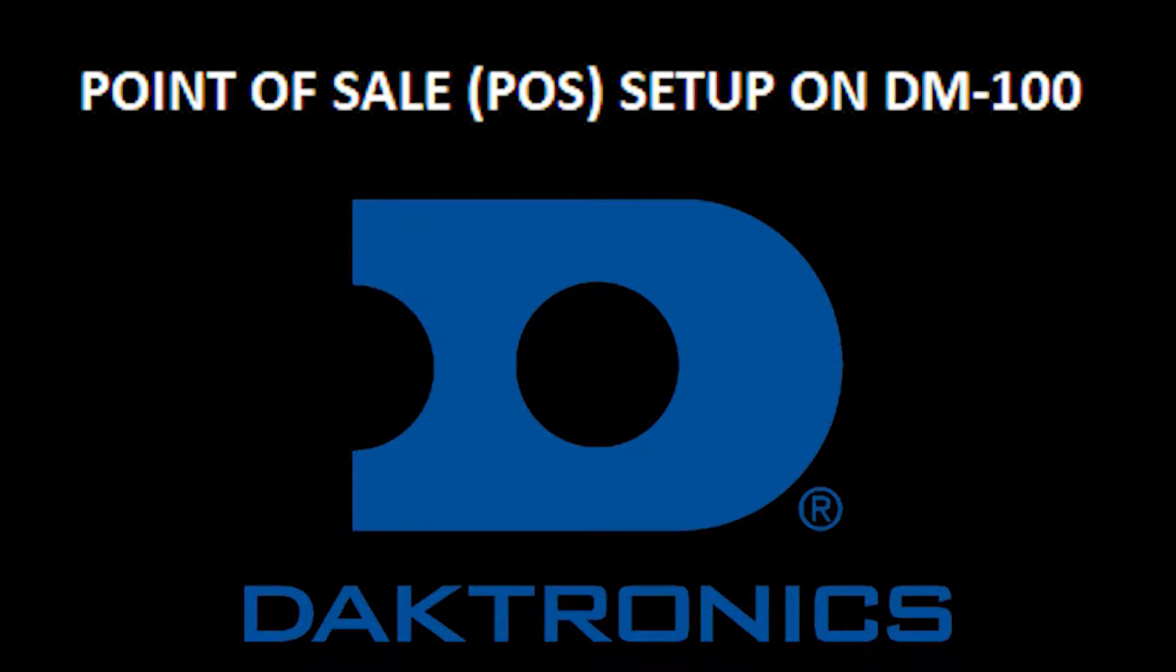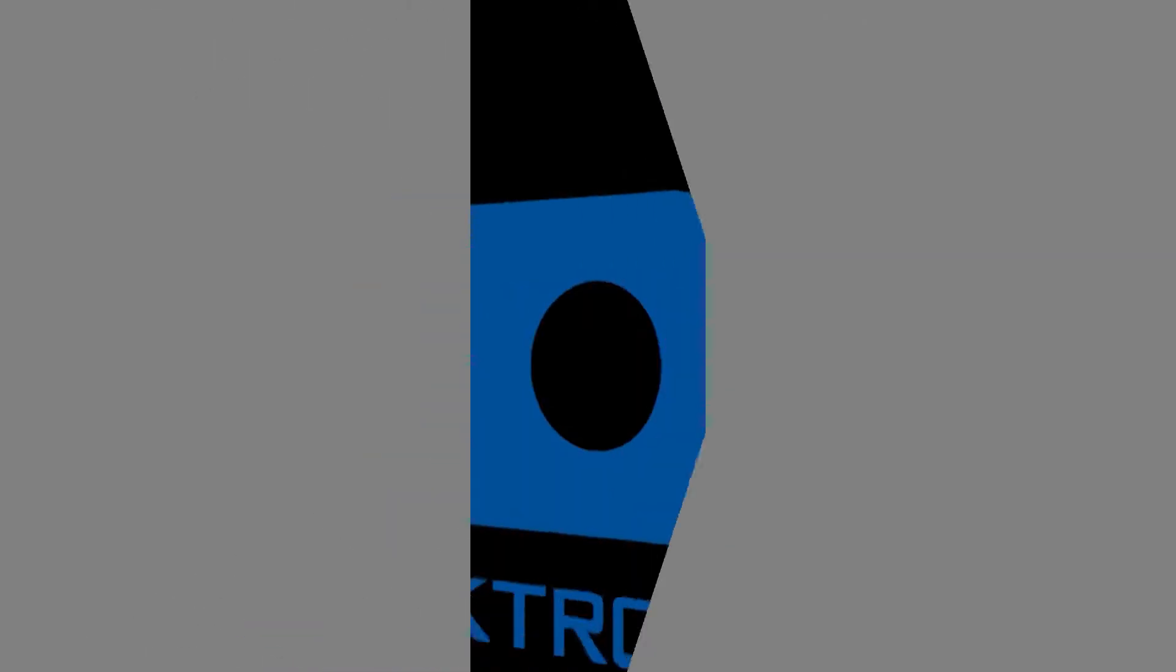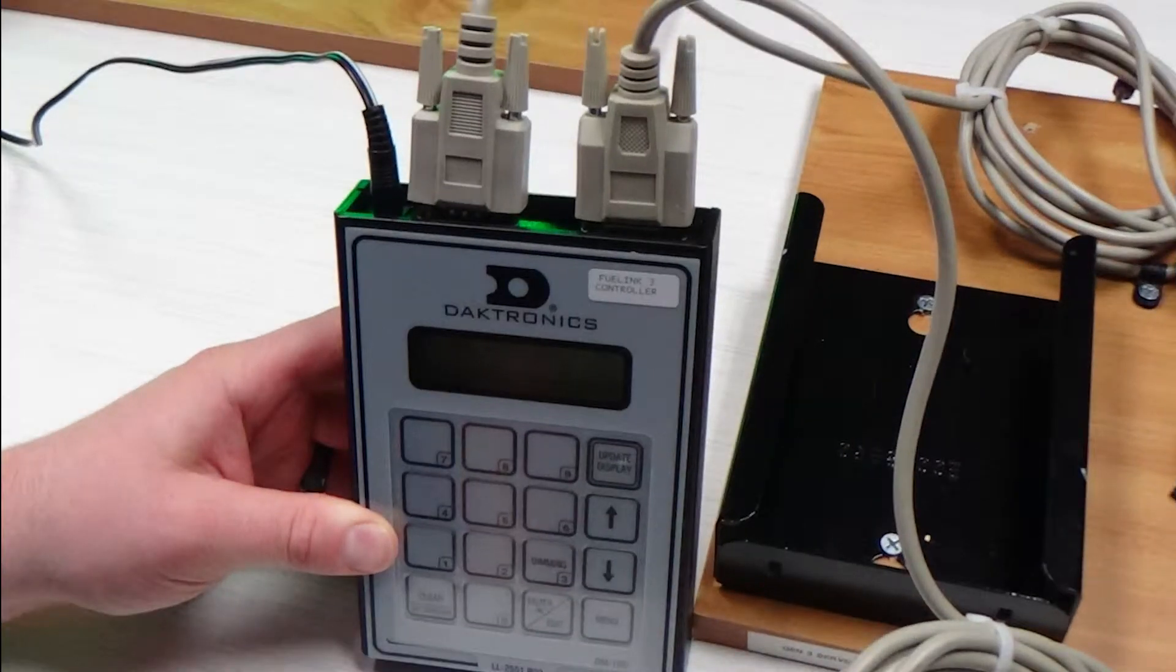Welcome to How to Set Up a DM100 for Point of Sale Training. The DM100 for Point of Sale setup will have two ports on the top as seen here, instead of the one you would see for other types of setups. There will be a cable going to the Point of Sale system and another going to Daktronics equipment.